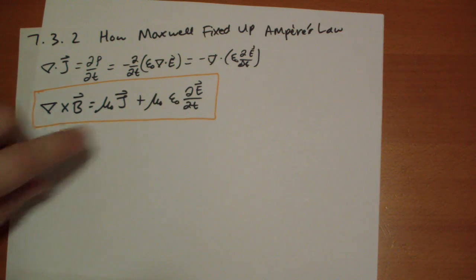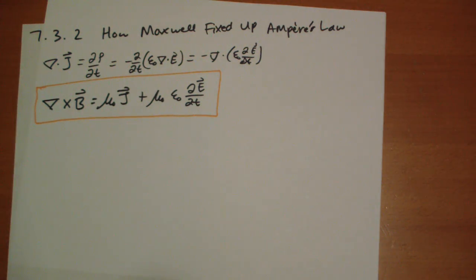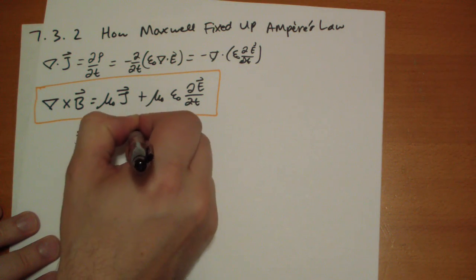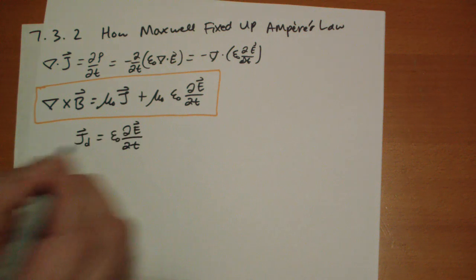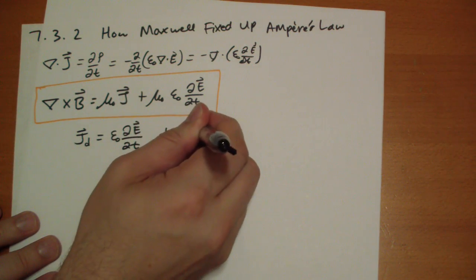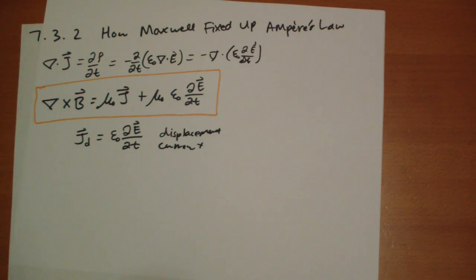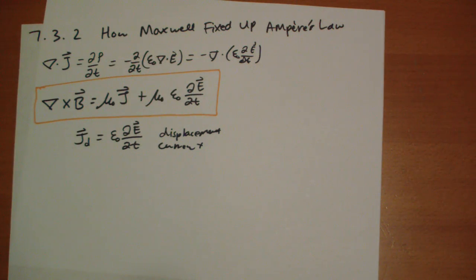This term is called the displacement current — it's a bad name. J_D is equal to epsilon naught times the time derivative of the E field. I like to think of it this way: just like a changing magnetic field gives you a current of sorts that generates a curly electric field, this is a change in the electric field — there's really no substantial difference between the two. When you have a rapidly changing magnetic field it feels like a current.